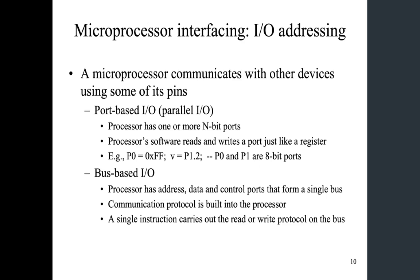Next, we're going to talk about IO addressing. IO addressing is for the microprocessor to communicate with other devices using some of its pins. We're going to look at port-based and bus-based. Port-based IO, or parallel IO, is when the processor has one or more m-bit ports. Many processors, for example PIC microcontrollers and some AVR microcontrollers, have ports with names. When you access such ports, you can use the names of the port, and the software reads and writes a port just like a register.